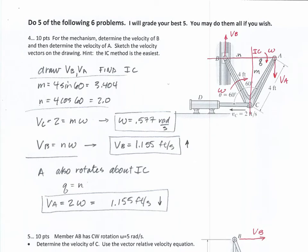These next six problems are a combination of chapter 16 and chapter 17 problems. The first one uses the IC method. To use the IC method, first find the IC by recognizing the directions of the velocities. The velocity of C goes in its direction because of the solenoid, and the velocity of B has to go straight up. Drop perpendicular lines to the known velocity vectors and find the instantaneous center. Then find distances M and N, and using velocity of B equals N times omega, you find VB equal to 1.15. This was worth about seven points.